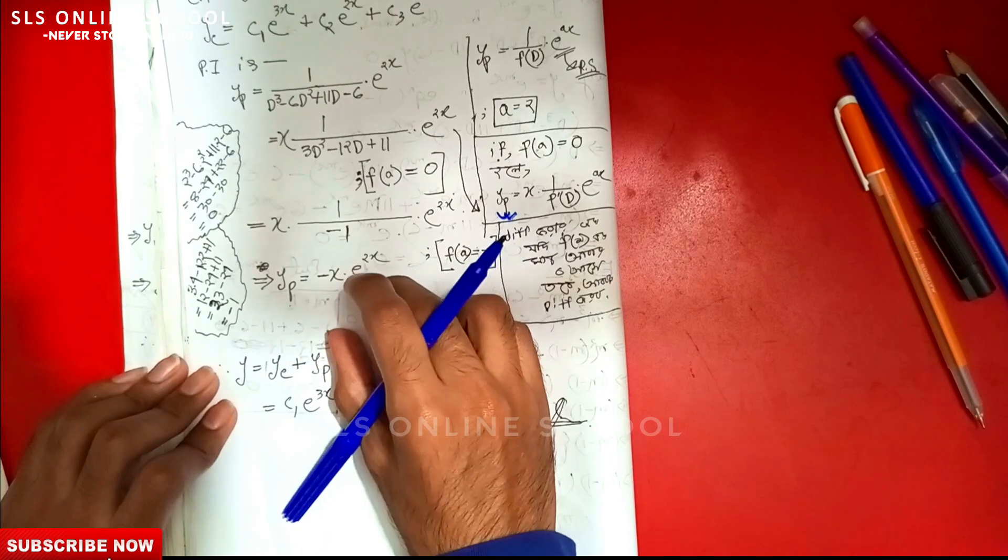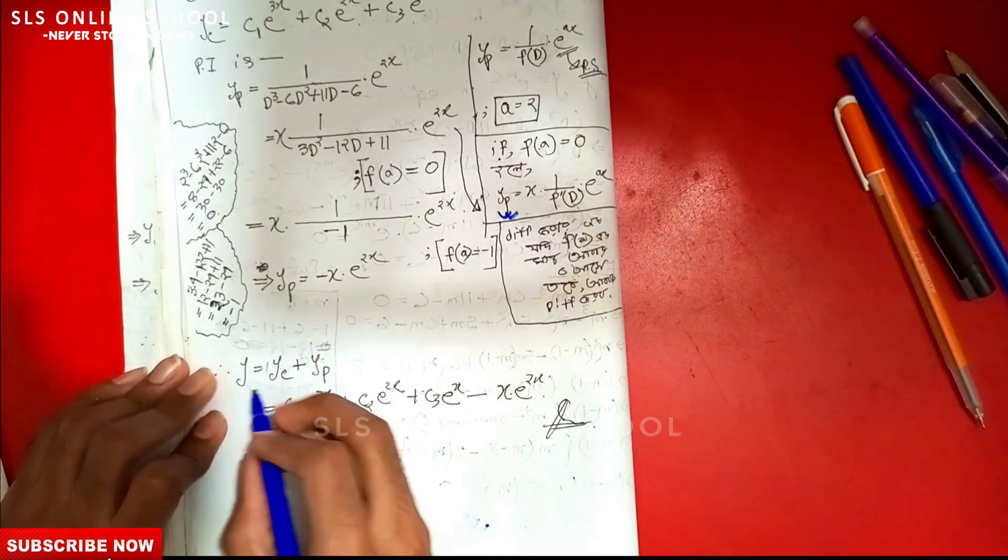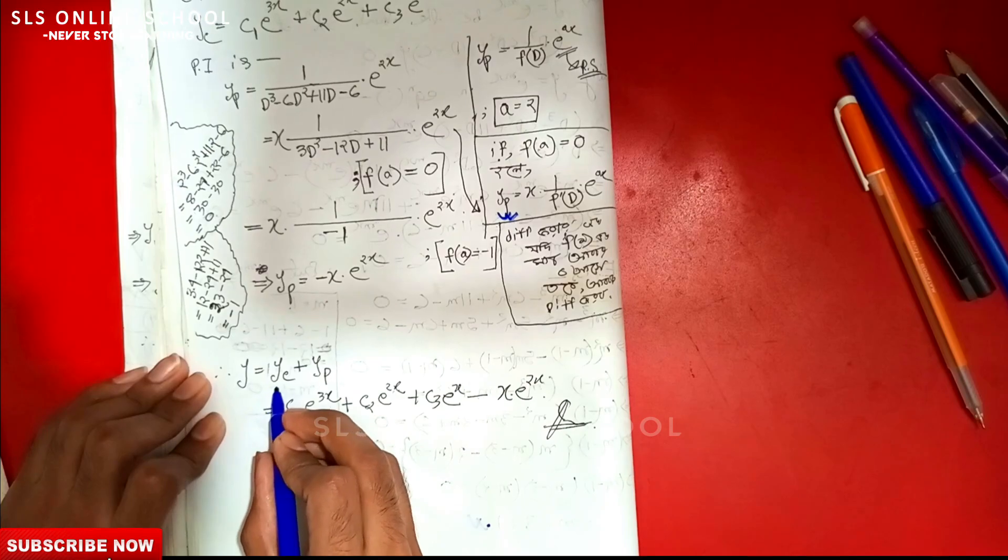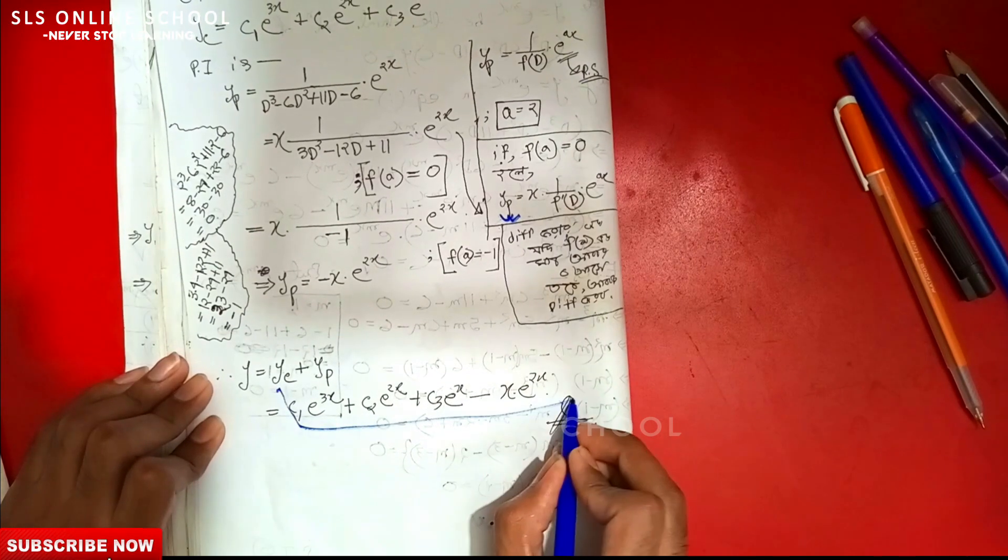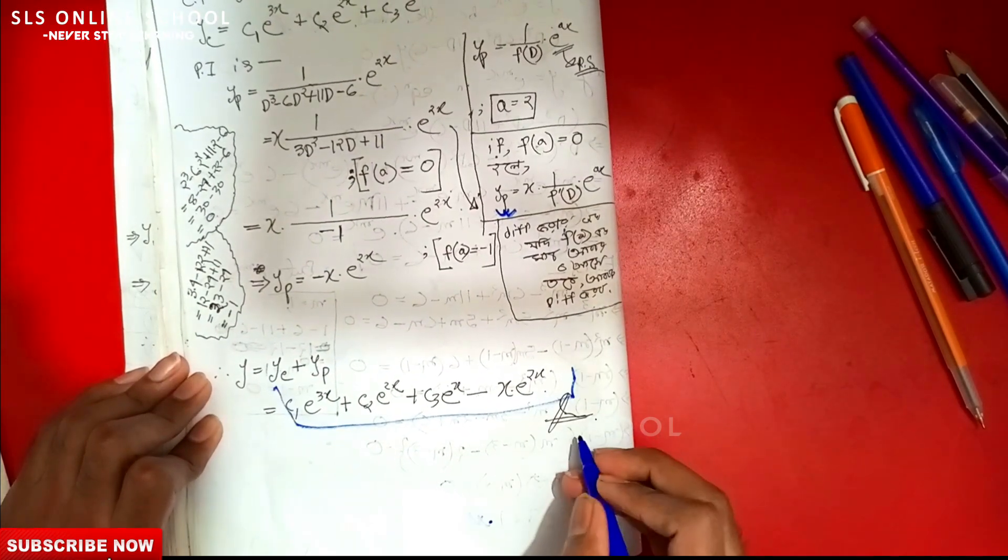That is the form of yp, and finally y = yc + yp. This is the final answer.